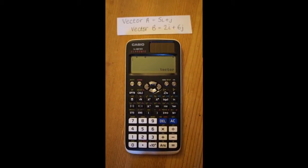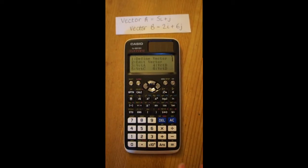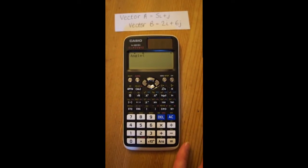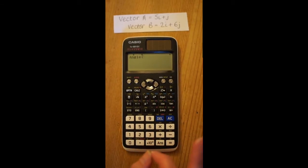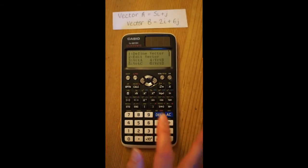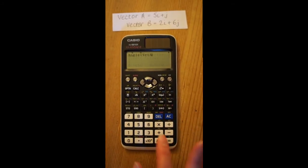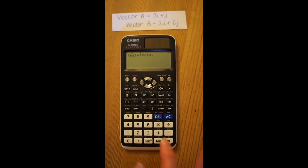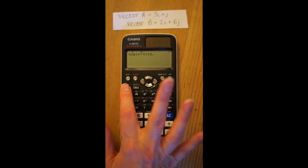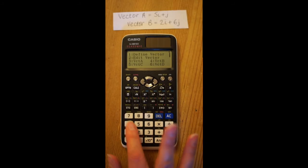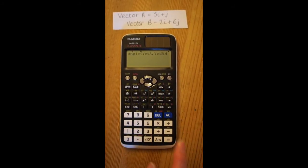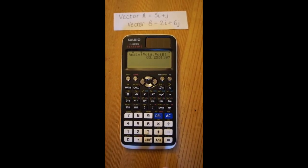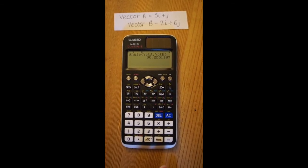Now to find the angle between the two vectors, press option, then scroll down and choose 3 for angle. Now we need to enter vector A by pressing option 3. Now comma, shift, close bracket for that. Now we need to enter vector B, option 4, close bracket. Now all we need to do is press equals, and we have the angle between them in degrees, 60.3 degrees.